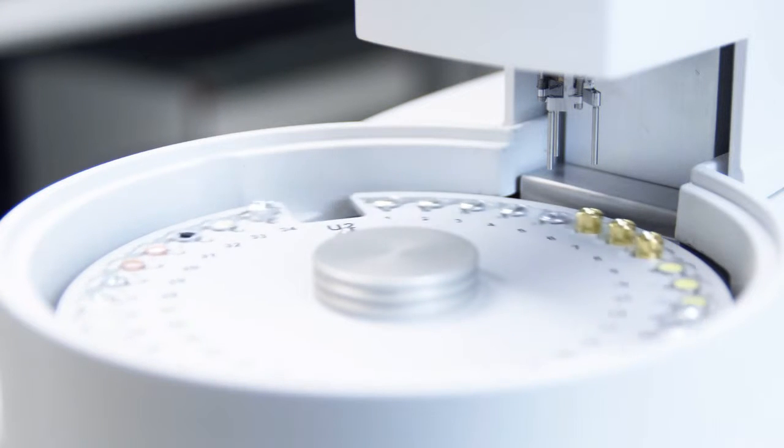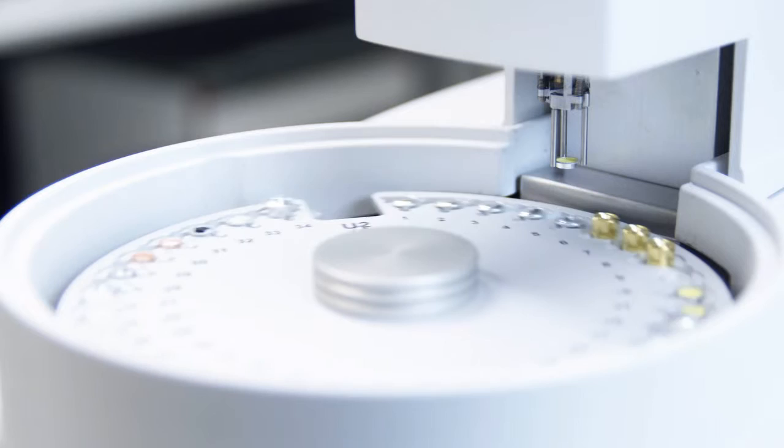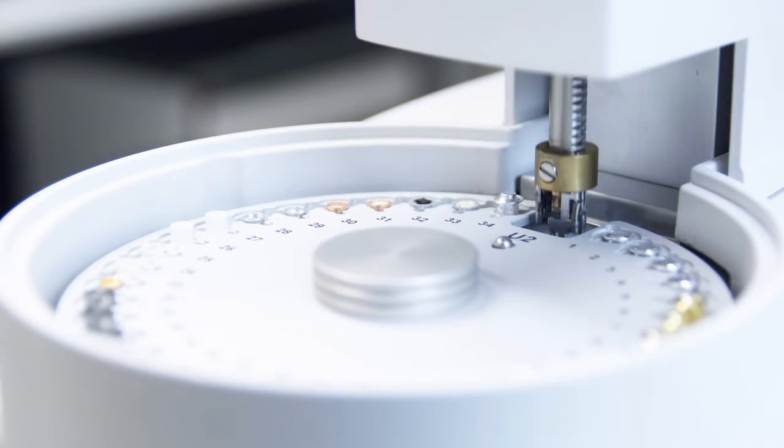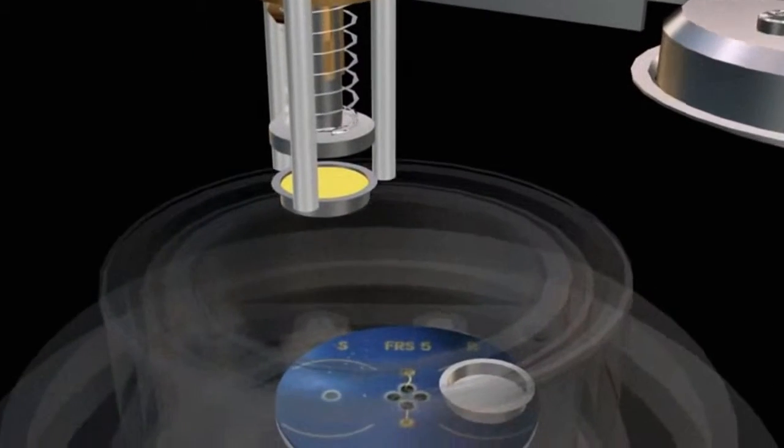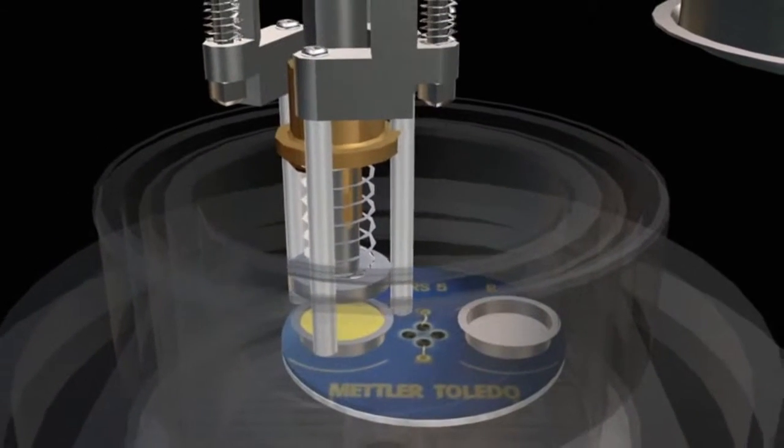The Mettler Toledo DSC models can be automated using a robust and reliable sample robot. The robot has 34 sample positions and a universal gripper capable of handling all types of crucibles.